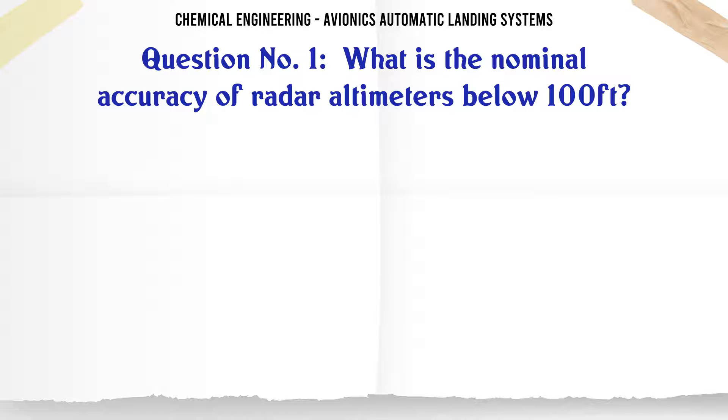What is the nominal accuracy of radar altimeters below 100 feet? A. 5 feet. B. 10 feet. C. 20 feet. D. 1.5 feet. The correct answer is 1.5 feet.